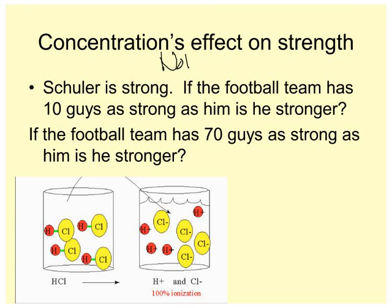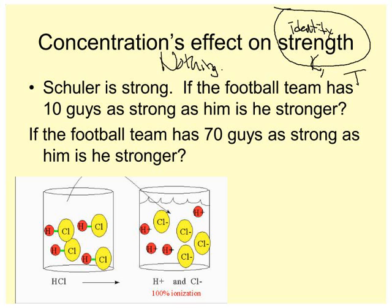Concentration's effect on strength is nothing. Let me just say before I get anything else, nothing. The effect of concentration on strength is nothing. Strength is based on identity. It's based on identity and polarity and all those other things. But if you know the identity, the strength is constant. It's based on the identity, which is based on Ks. The only thing that changes K is temperature. Concentration is based on moles, which you can change per liter. So Schuller is strong. Here's my example. Schuller is strong. The football team, that would be his strength, individually. So Schuller has a personal characteristic of being strong. If the football team has 10 guys as strong as him, does that make him stronger? No. Schuller is just strong. If the football team has 70 guys as strong as Schuller, does that make him stronger? No. It just makes Schuller as strong as he is.